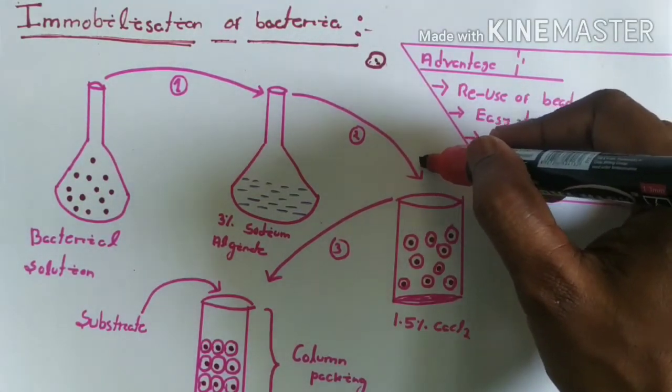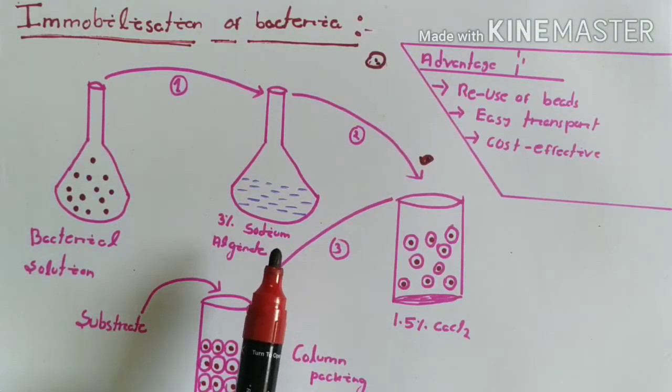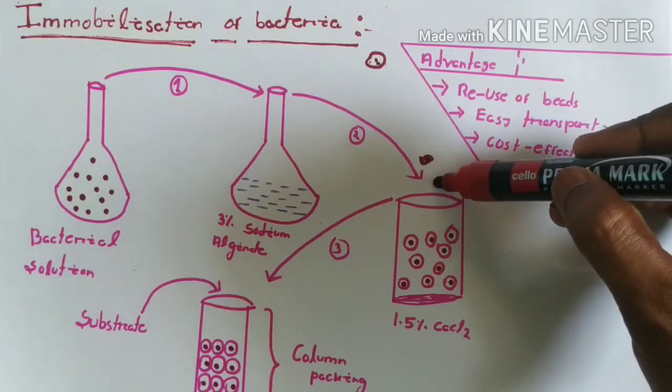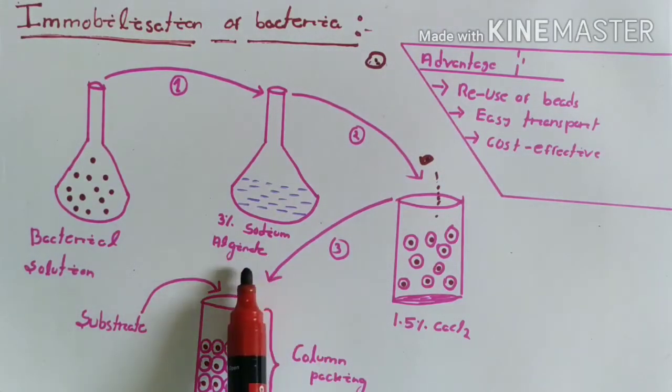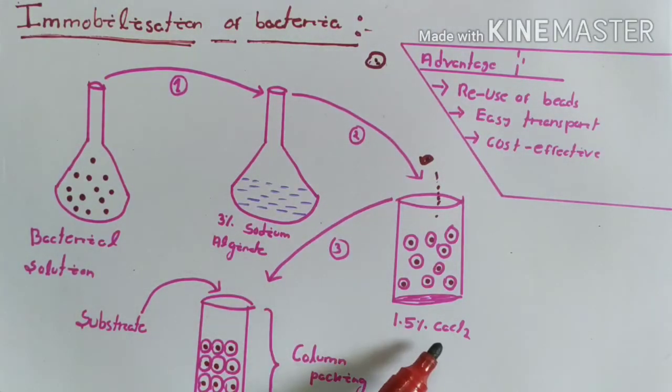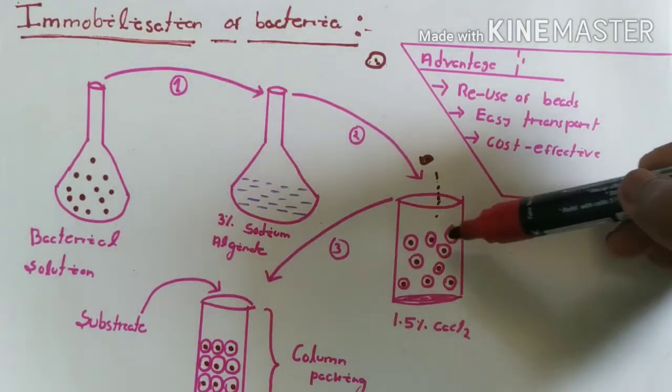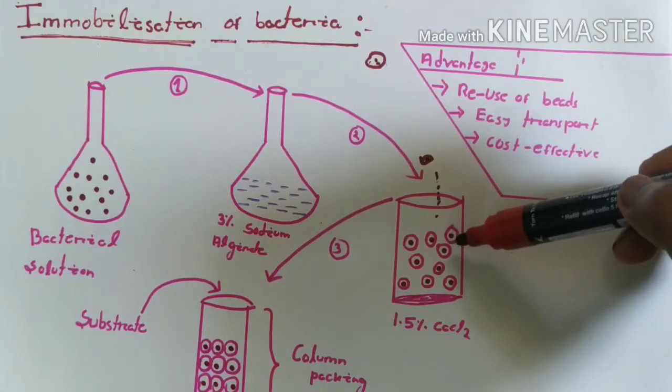The container has one point five percent calcium chloride. The mixture of this bacterial solution and three percent sodium alginate should be added drop wise. When the sodium alginate reacts with the calcium chloride, it forms the bead. It forms calcium alginate which is formed as beads.